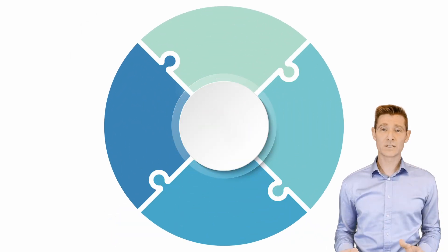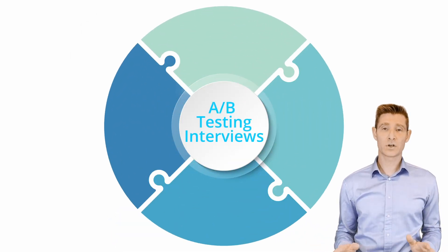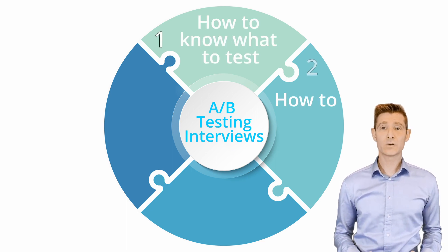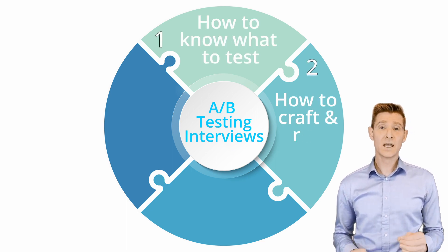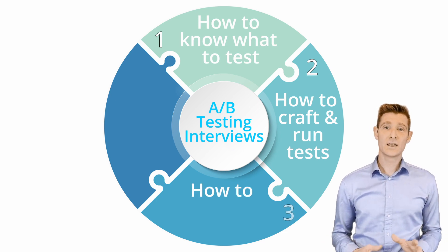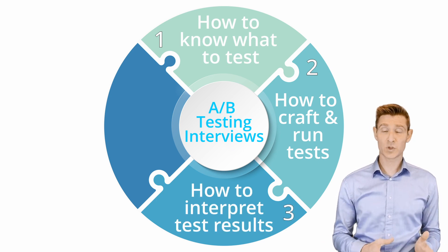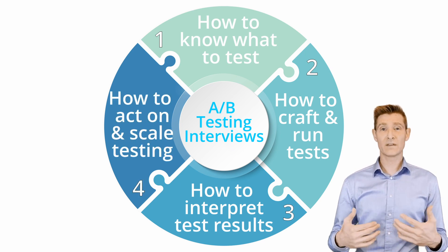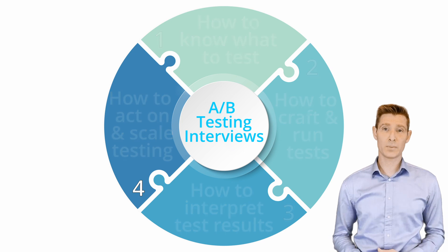There are four types of categories that most of these questions fall under. The first category is how to know what to test. The second category is how to strategically create and execute a good test. The third category is how to interpret the test results properly. And the fourth category is what to do with the test results — evangelizing and scaling a testing program. Today, I'm going to walk you through each of these four categories and the types of questions that come up in each category, and then we'll talk about how to answer them, or potentially what you should be asking if you're interviewing a candidate.